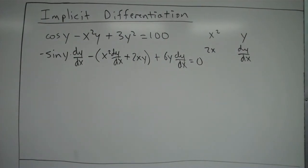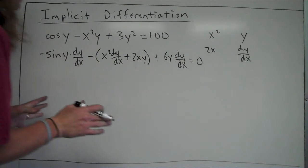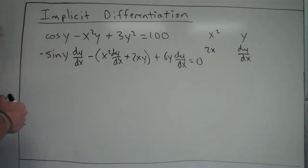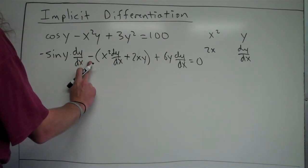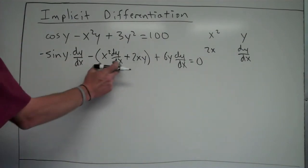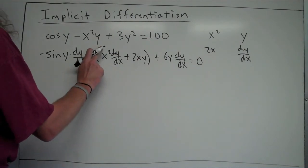Alright, so at this point here, I need to get all my dy over dx's on one side, all my terms without dy over dx's on the other side. Okay, so this negative right here is the first thing I'll deal with, and I will distribute it to both this term and this term here, and I'm going to cheat a little bit since I have a whiteboard.